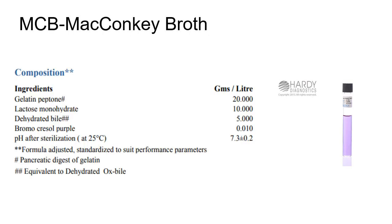Next is MacConkey Broth. Ingredients include gelatin peptone which is pancreatic digest of gelatin, lactose monohydrate, dehydrated bile equivalent to dehydrated ox bile, and bromocresol purple dye, at pH 7.3. MacConkey Broth is a modification of the actual MacConkey medium. The inhibitory neutral red used in MacConkey agar is substituted by the less inhibitory bromocresol purple dye in the broth. Bromocresol purple is more sensitive in recording pH variations in the medium.